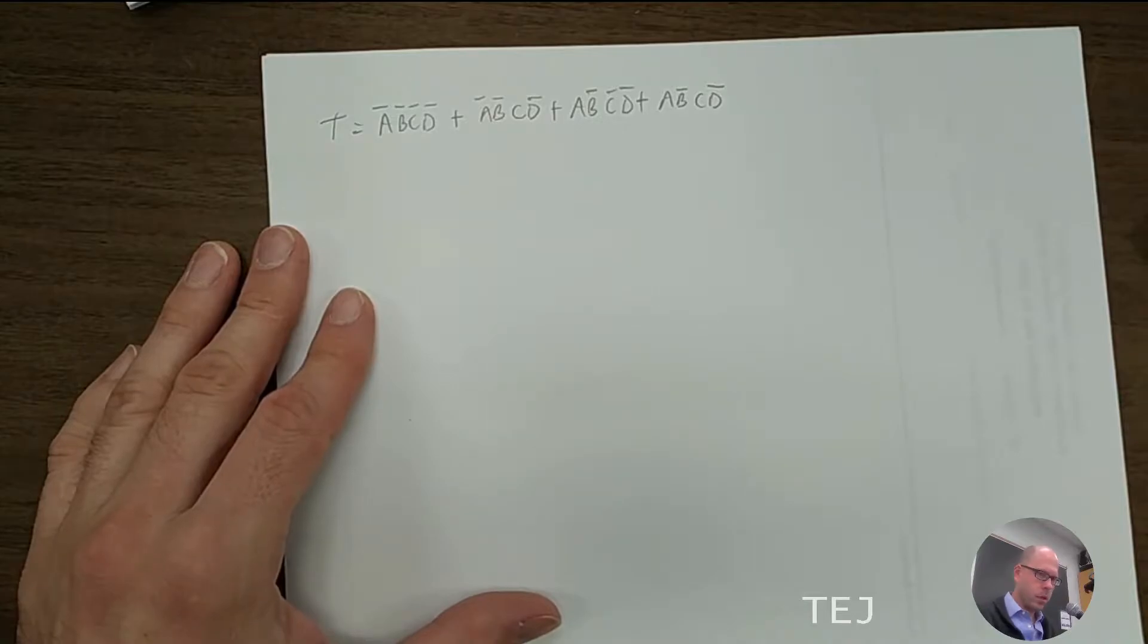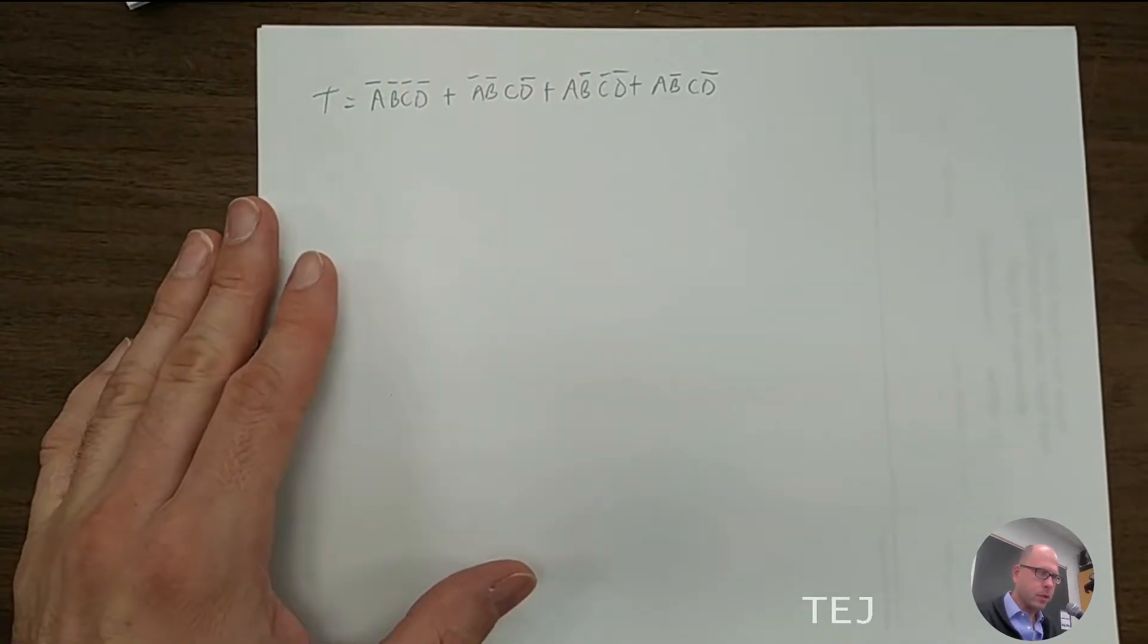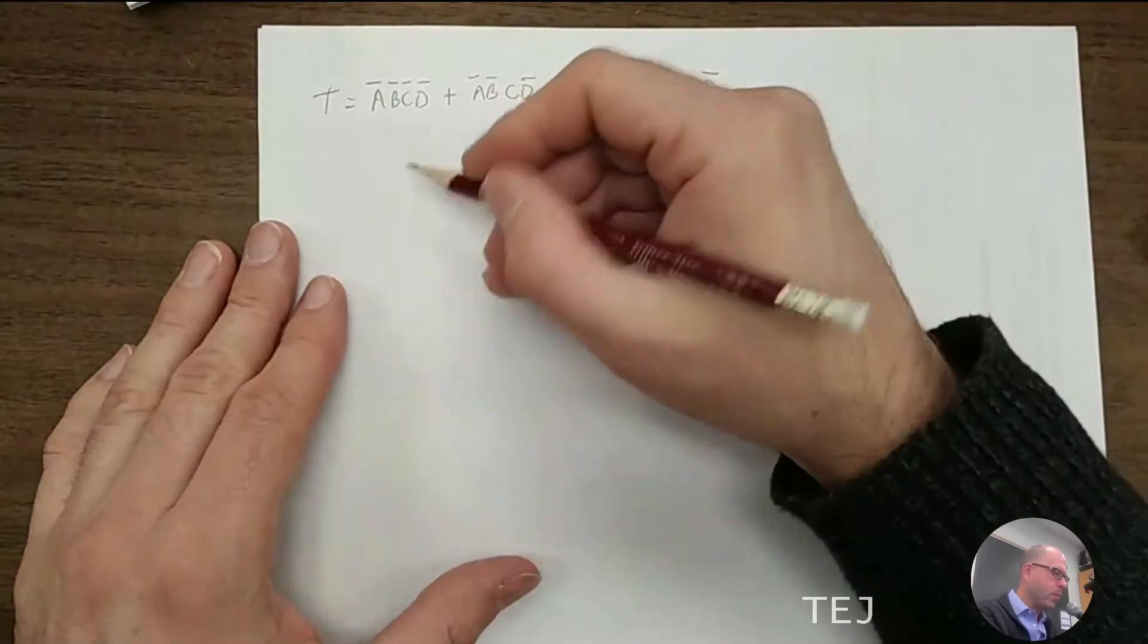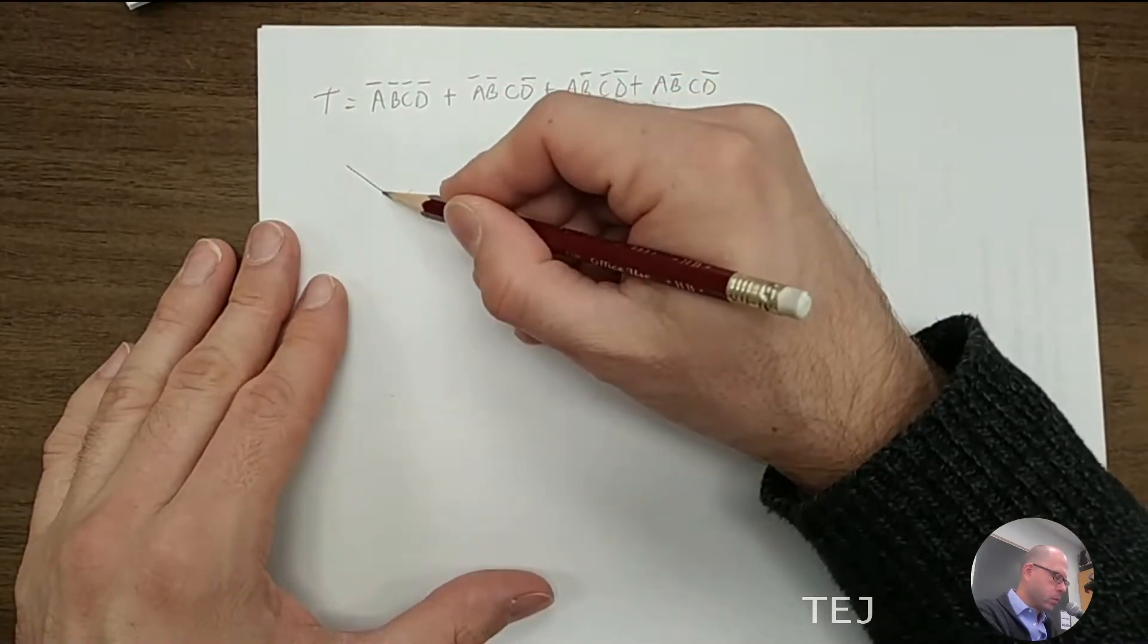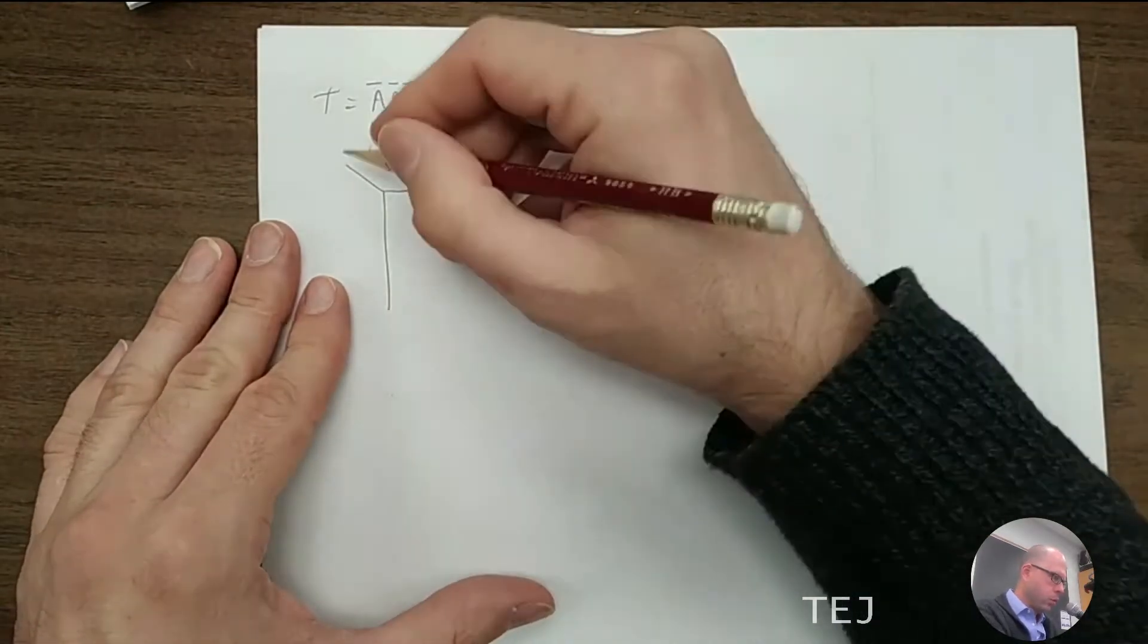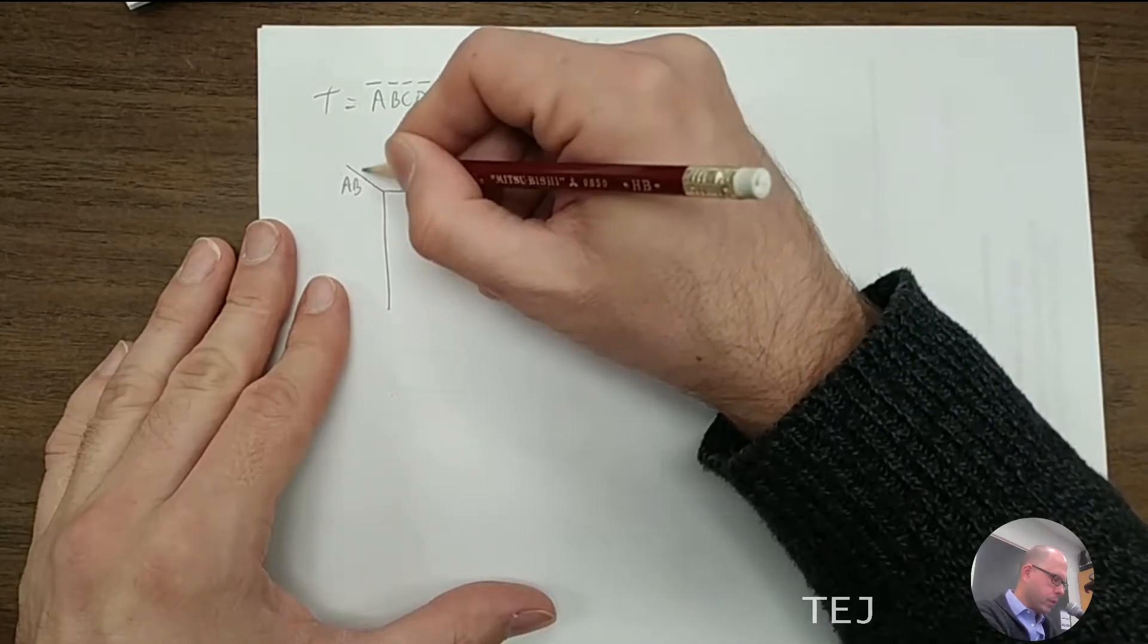So four terms, and really what you want to see here is how to set up the table, the map. So we'll have a and b, and then c and d.